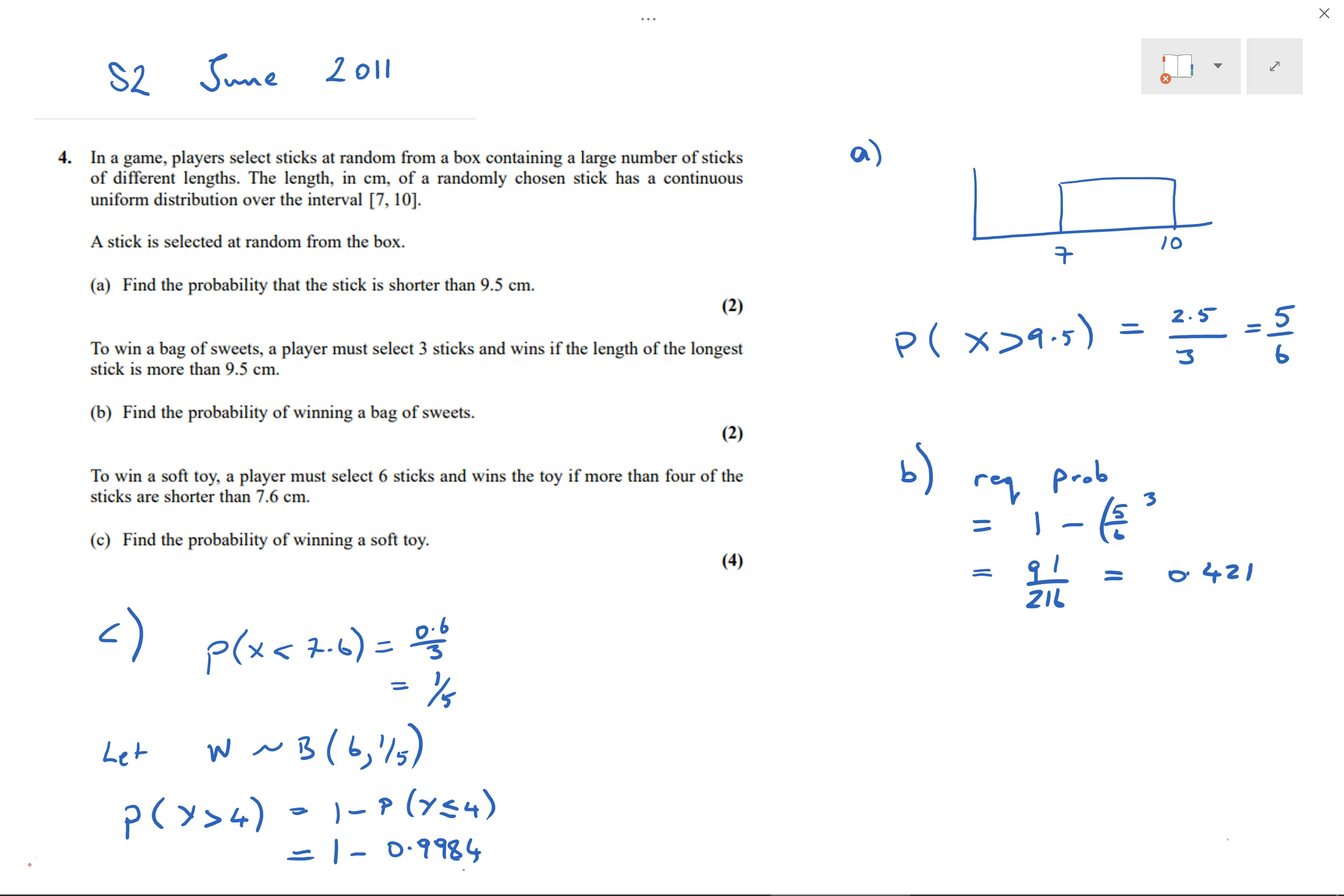Part a is pretty straightforward, so we'll just quickly mention that. Basically, we've got a uniform distribution between 7 and 10, and the probability of it being shorter than 9.5. I normally do a diagram, so we basically want the ratio of this area compared to the whole, or we can compare the lengths. So that's 2.5 over a total of 3, which is 5/6.